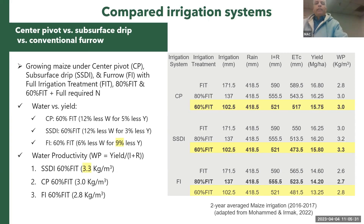Comparing center pivot with subsurface drip: high rainfall in the study affected total water applied, so the difference was not very large, but it gives an indication of relative performance. Under center pivot, a 12% reduction in water resulted in only a 5% yield reduction. Under subsurface drip, a 12% reduction in water caused only a 3% yield reduction. Flood irrigation reduced water by 6% but saw a 9% yield reduction. Water productivity was highest under subsurface drip, followed by center pivot, then flood irrigation.